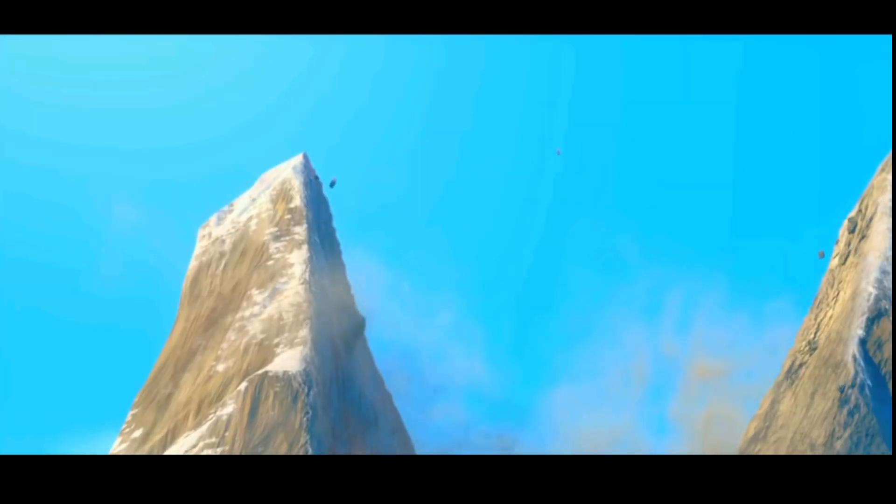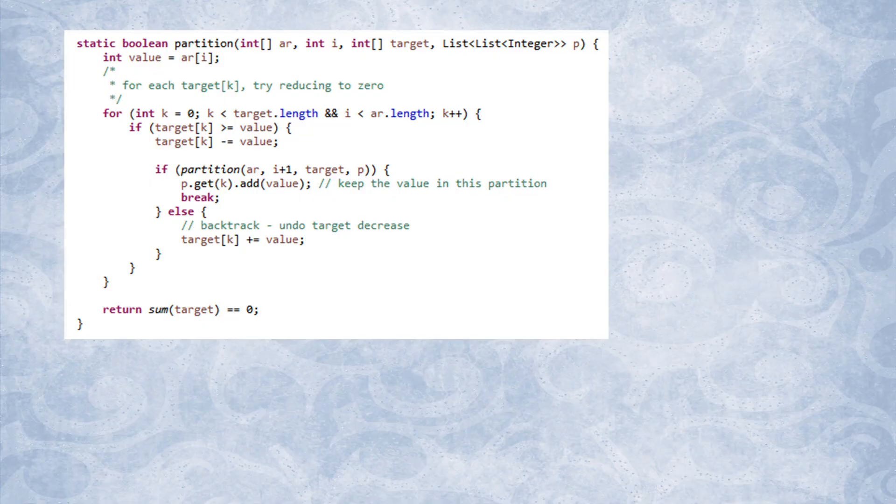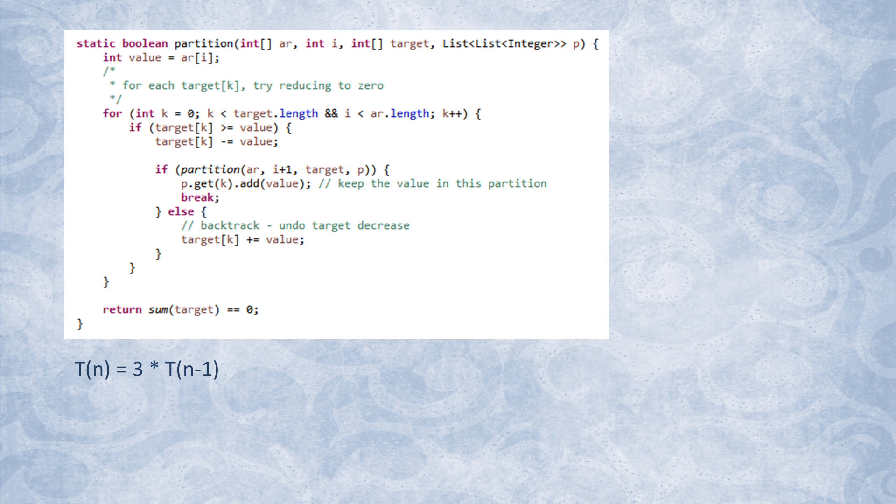The running time of this algorithm is a little tricky to analyze, but let's take a crack at it. The for loop may execute for however many partitions there are. If the number of partitions is 3, for example, then we get a recurrence relation of t equals 3 multiplied by t. Unrolling this formula further leads to exponential running time of order 3 to the power of n.